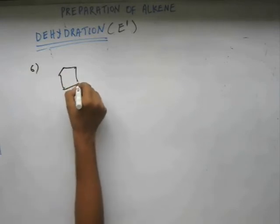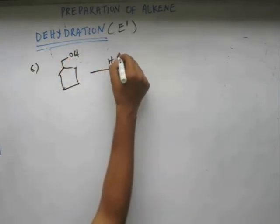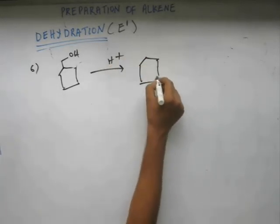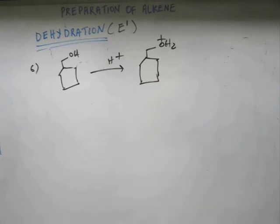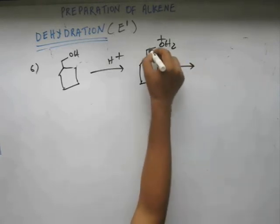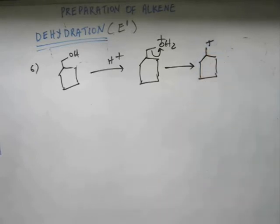So let's do question number six. Let's do step by step. There are three easy steps to get the product. Step number one is protonation. Simple. Step number two is removal of water molecule. If you remove water molecule, you'll get a plus charge like this.